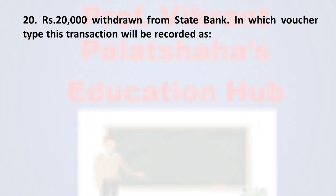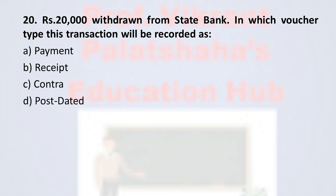Question number twenty: Rupees 20,000 withdrawn from State Bank — in which voucher type will this transaction be recorded? Option A: Payment, Option B: Receipt, Option C: Contra, Option D: Post-Dated. The correct option is Option C, Contra. Any amount withdrawn from the bank is recorded as a Contra voucher, therefore the correct option is Option C, Contra.